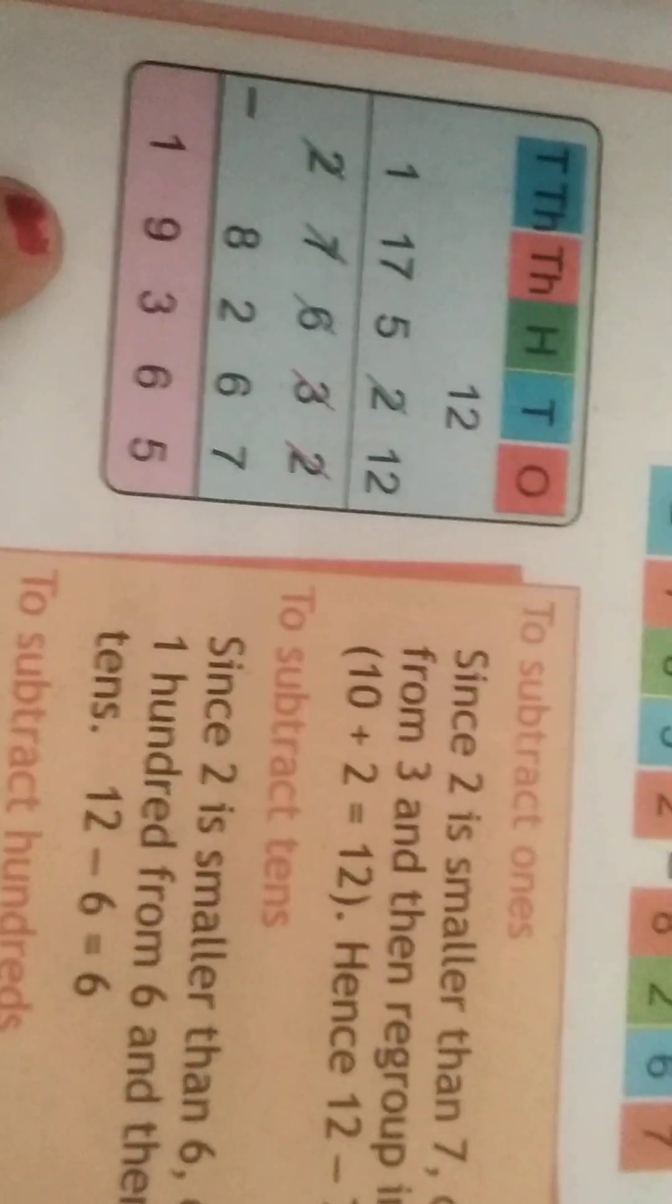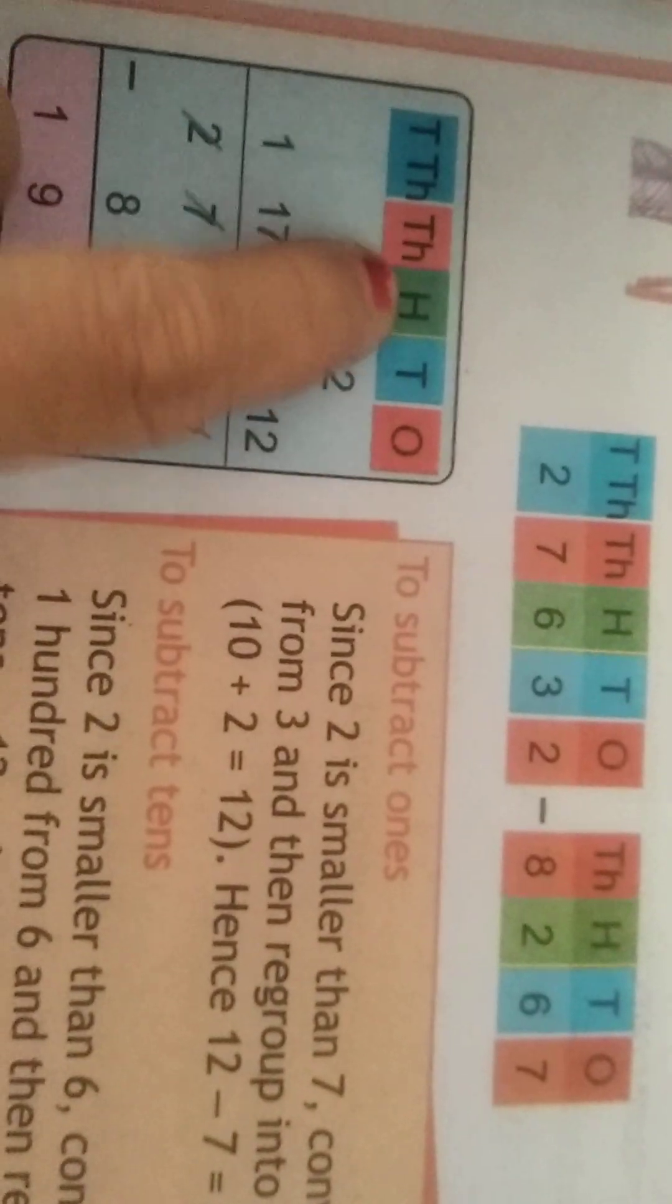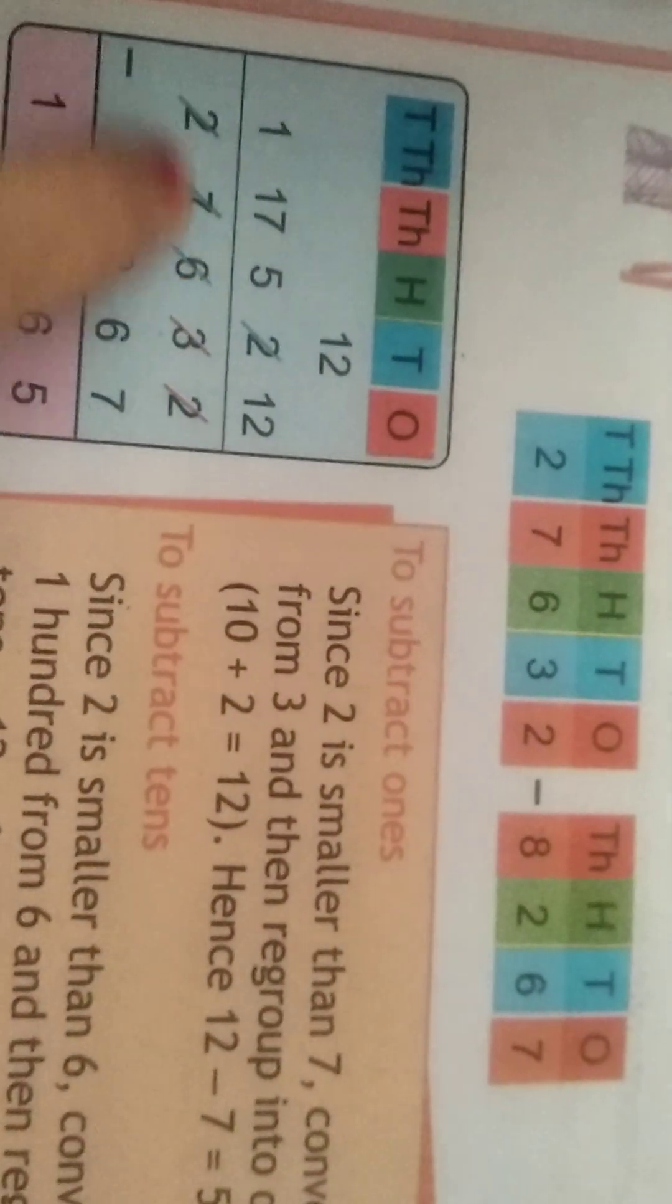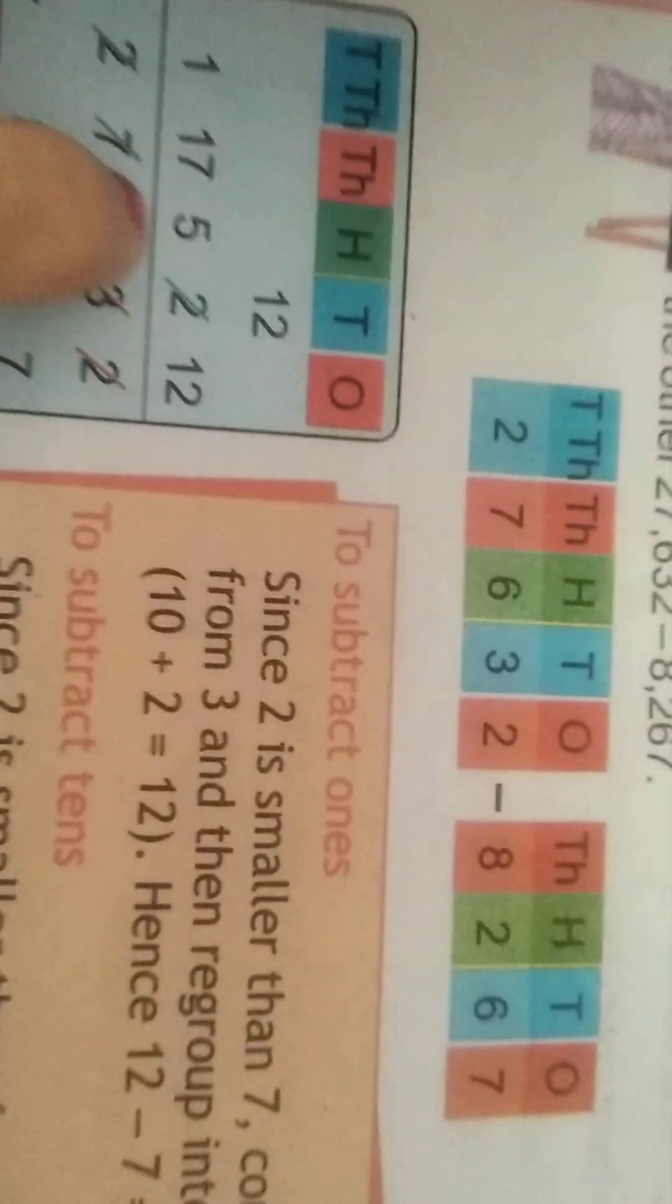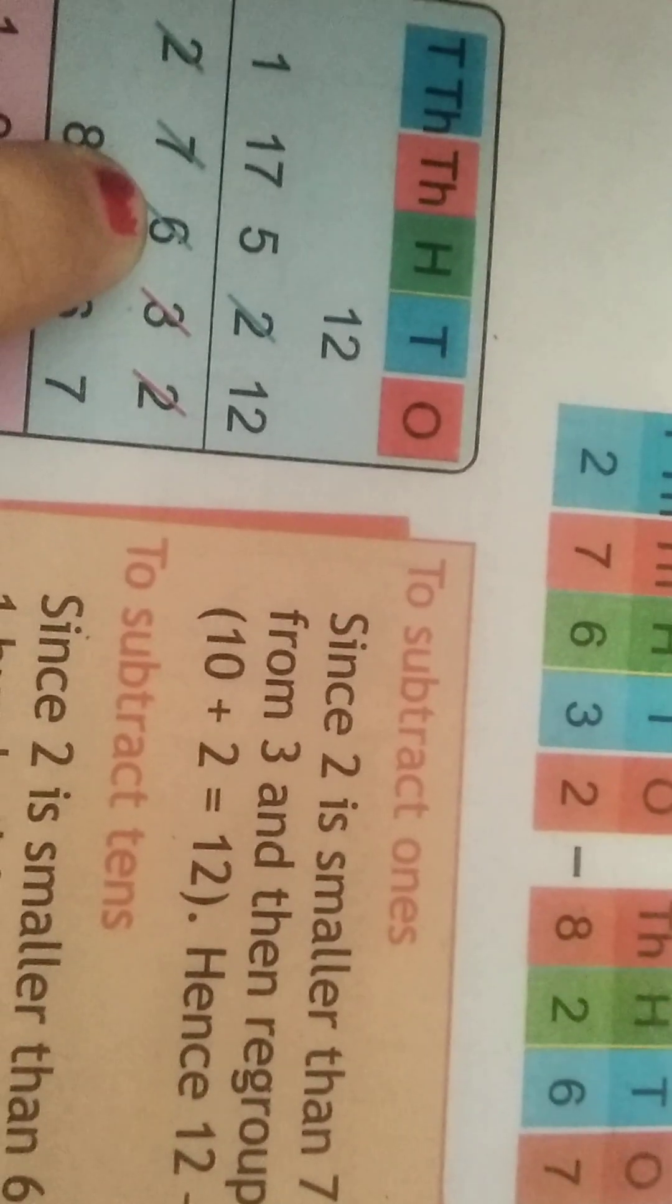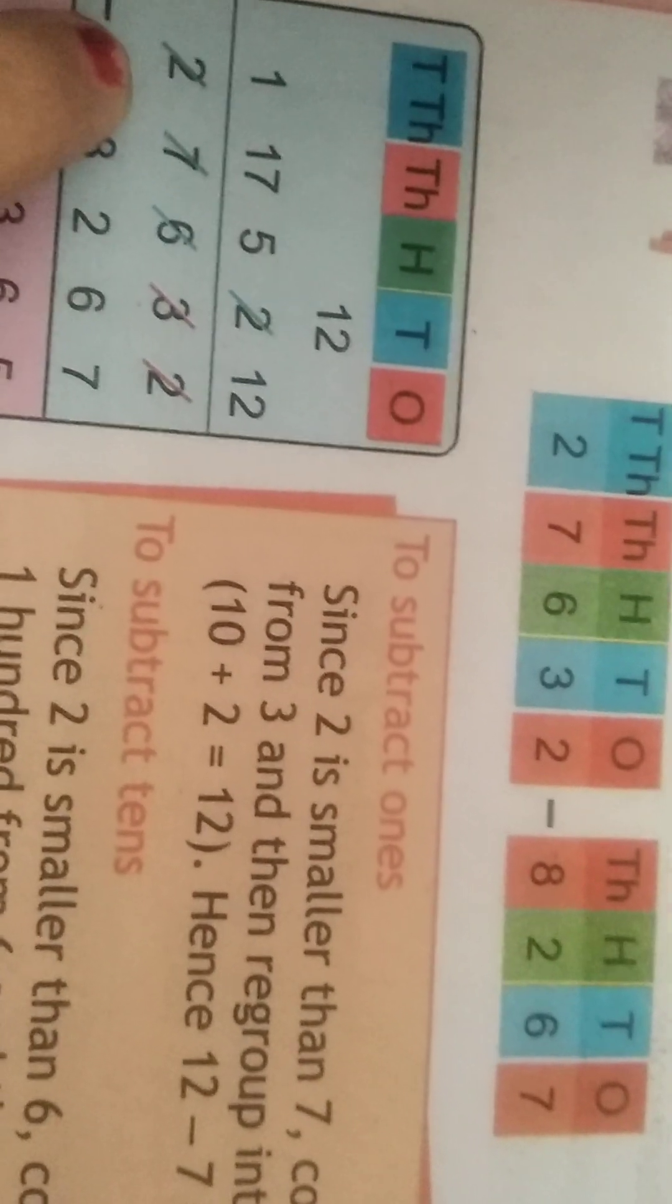So you have to write one below the other like this. Ones, tens, hundreds, thousands, ten thousands. 27632 - 2 ones, 3 tens, 6 hundreds, 7 thousands, 2 ten thousands.